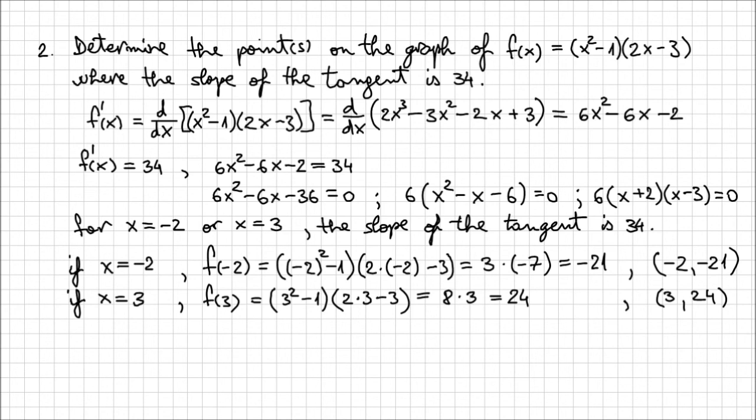Now we found these two points. Let's conclude this problem expressing everything as it was requested from us. We can say that at points (-2, -21) and (3, 24), the slope of the tangent is 34.